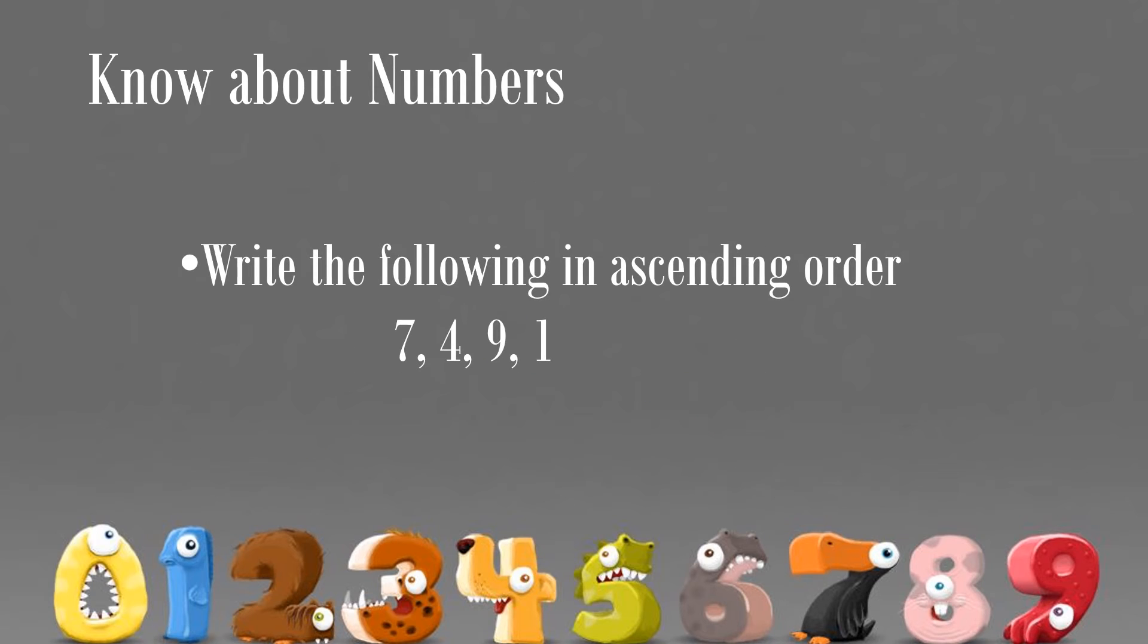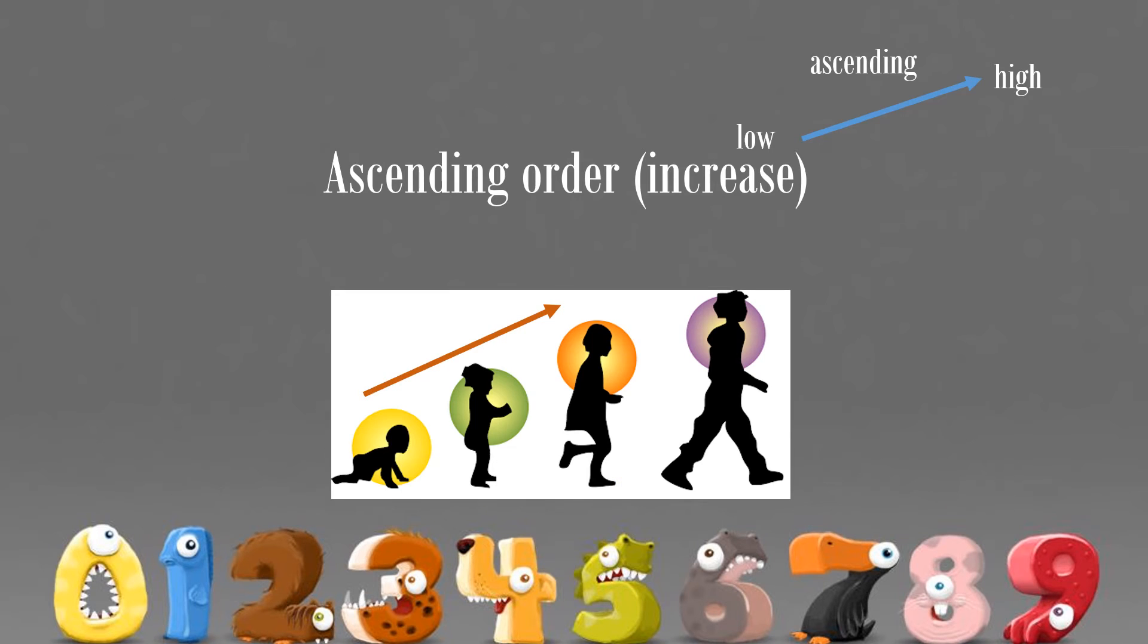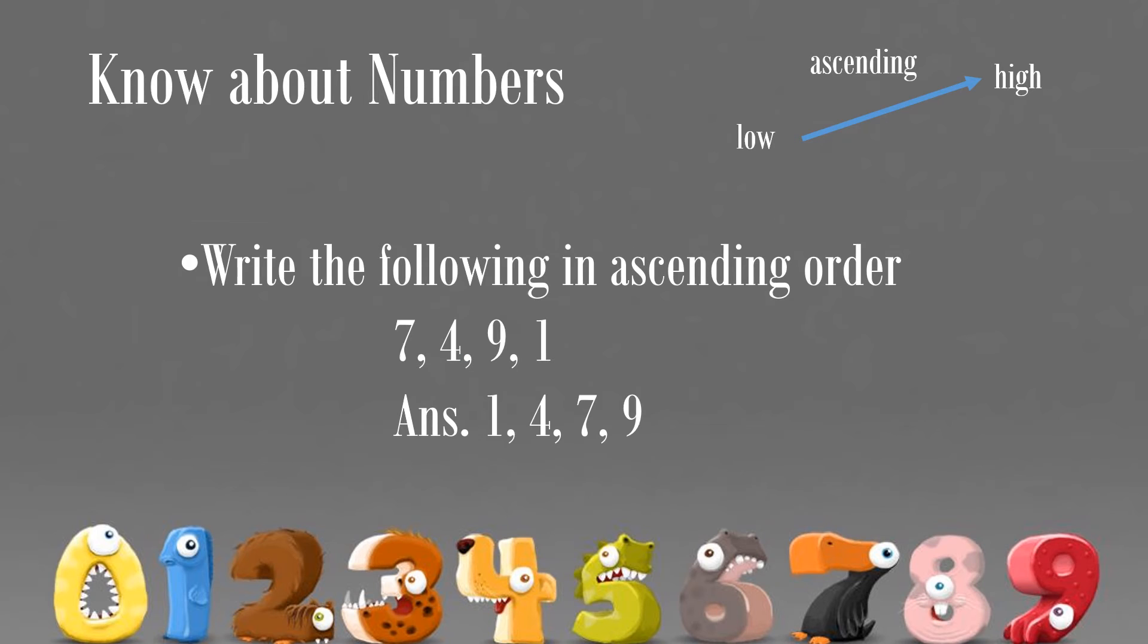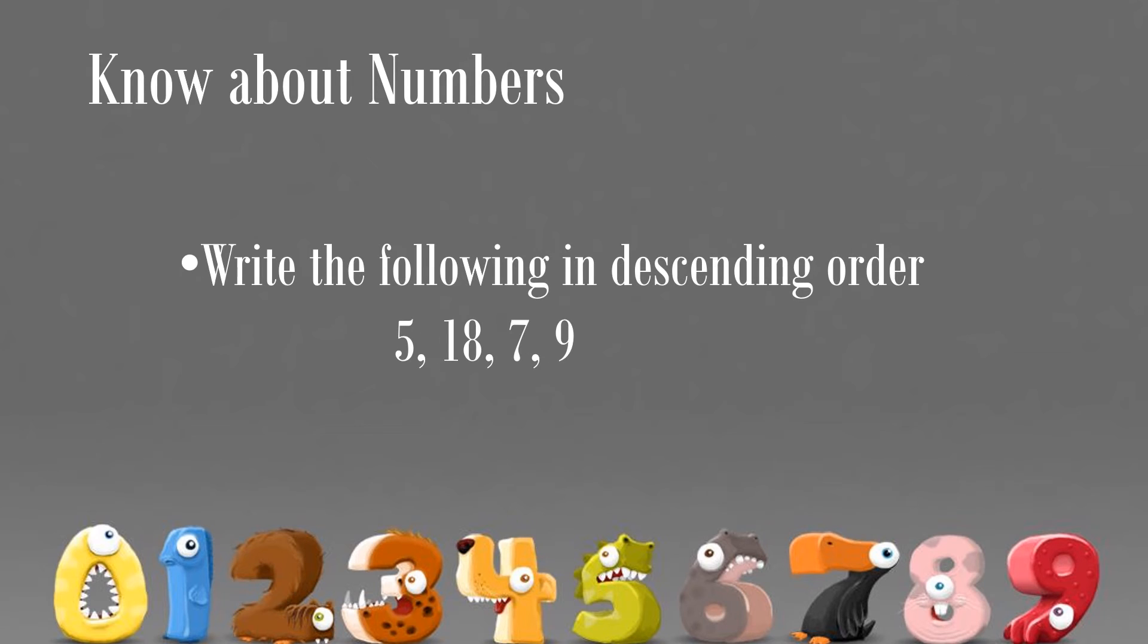Ascending order is like an age or height of a person. It will only increase from lower number to the higher number. Write the following in ascending order.